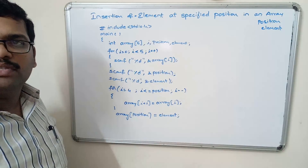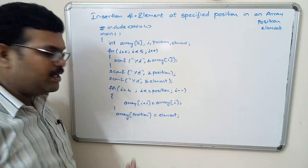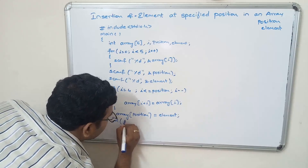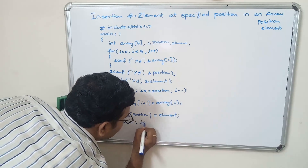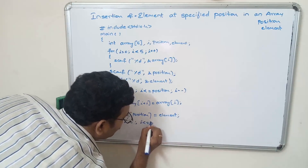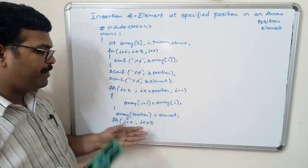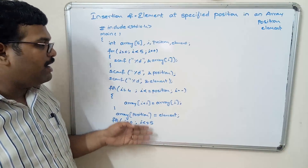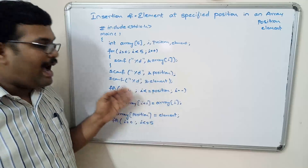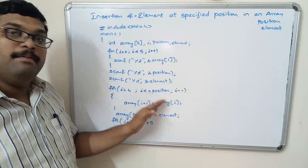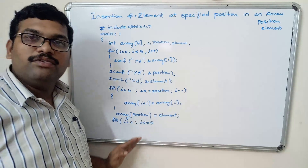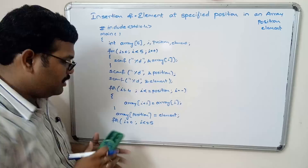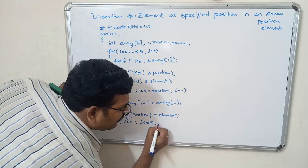Now display the elements of the array. Use an iterative statement: for i = 0, i less than or equal to 5, because after inserting an element the index values go from 0 to 5, giving 6 elements total.